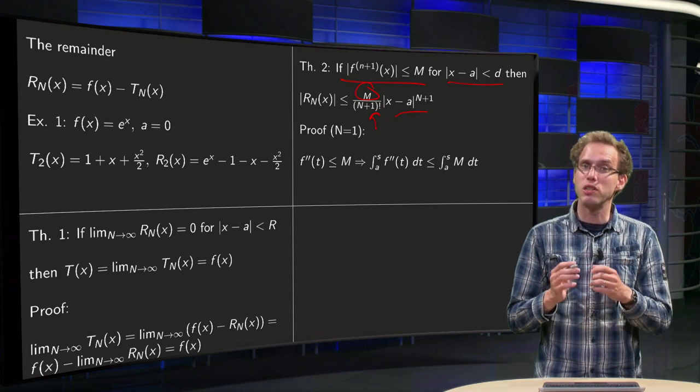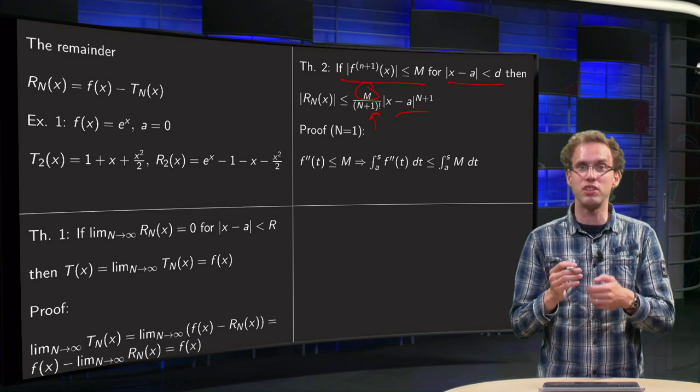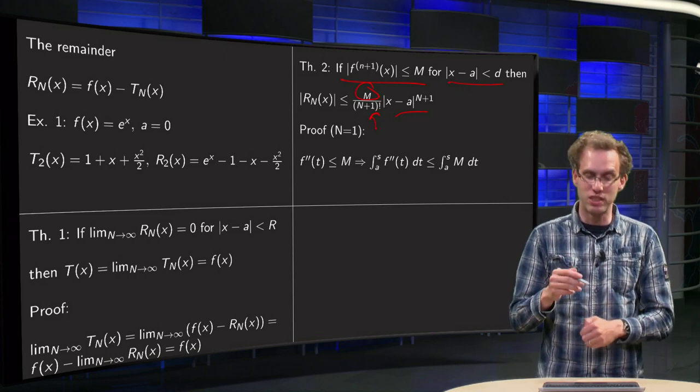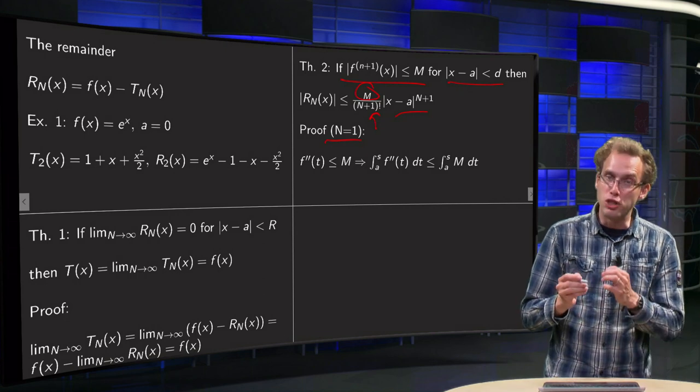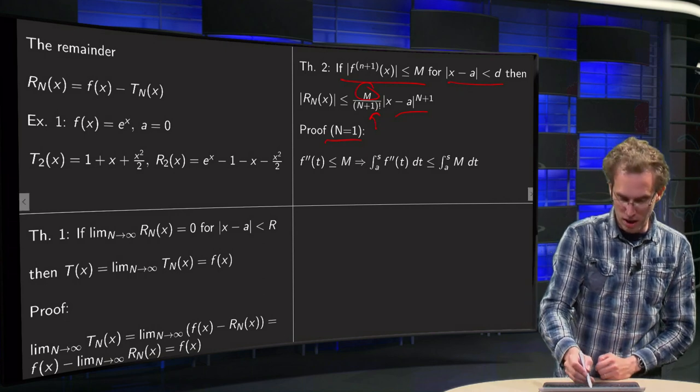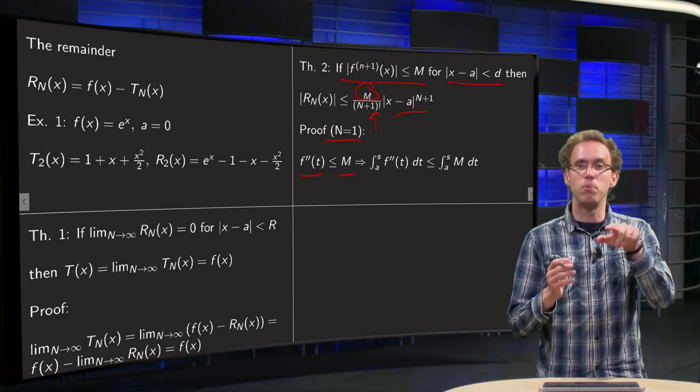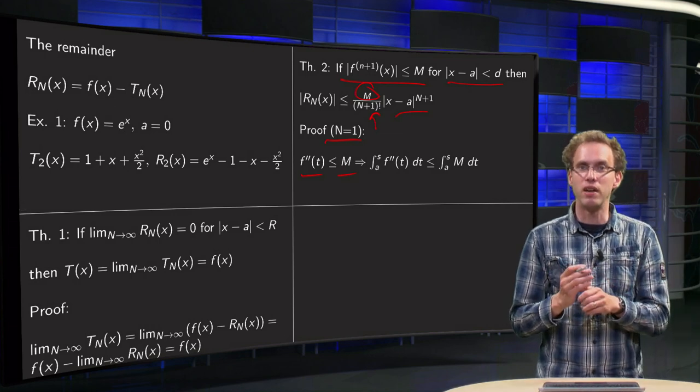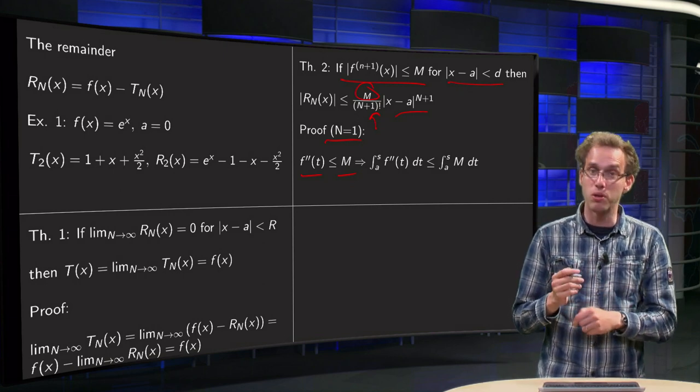And this n plus 1 factorial is going to be very big very soon. So this is a really nice inequality, because the R_n of x will be very small if your n is already 10 or something like that. Let's see why this is true. Let's do the proof only for n equals 1.